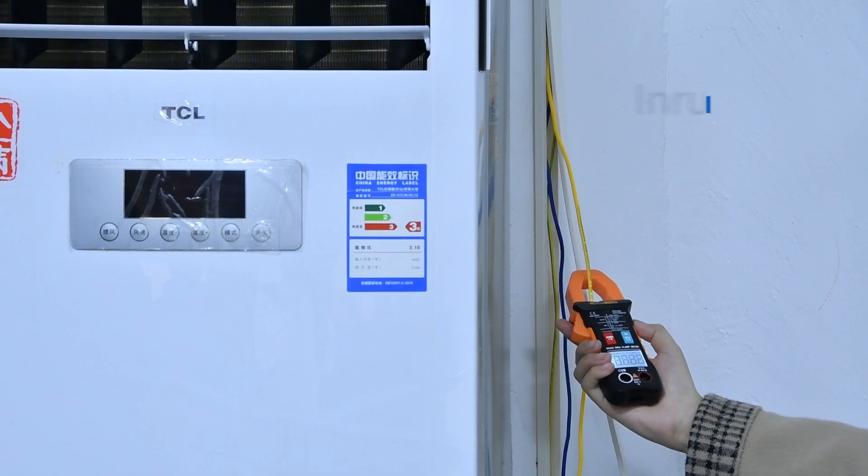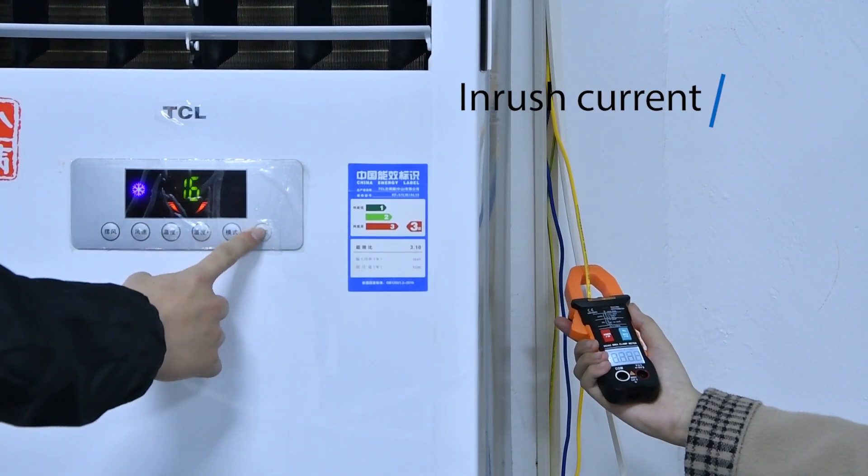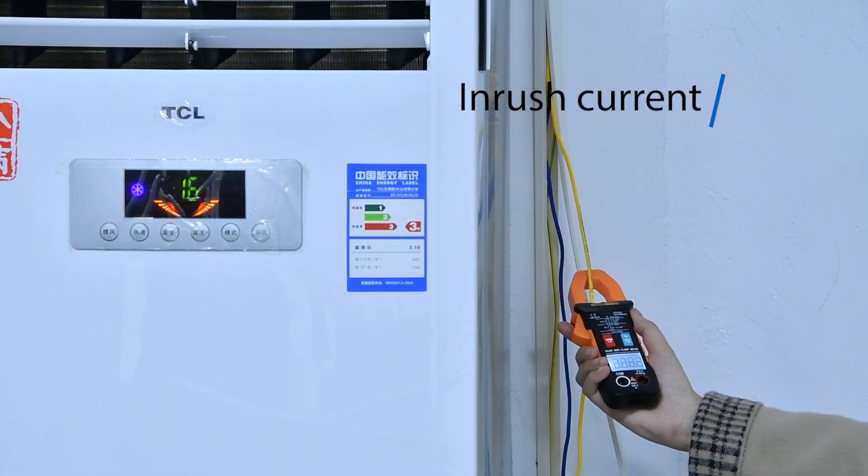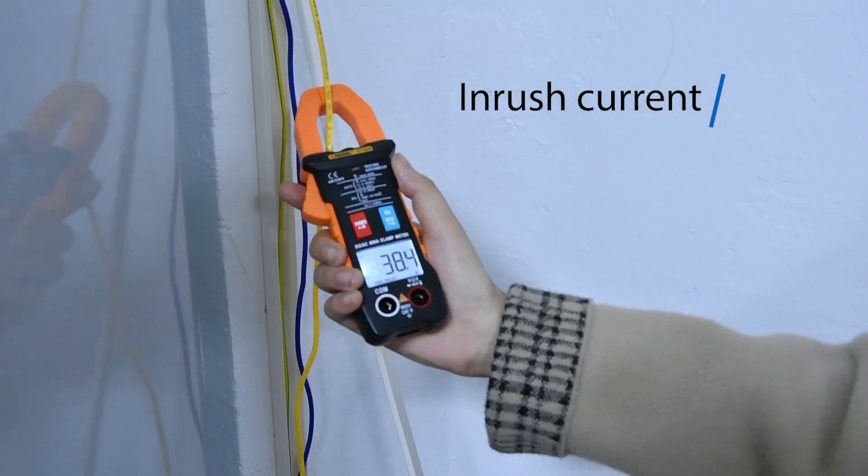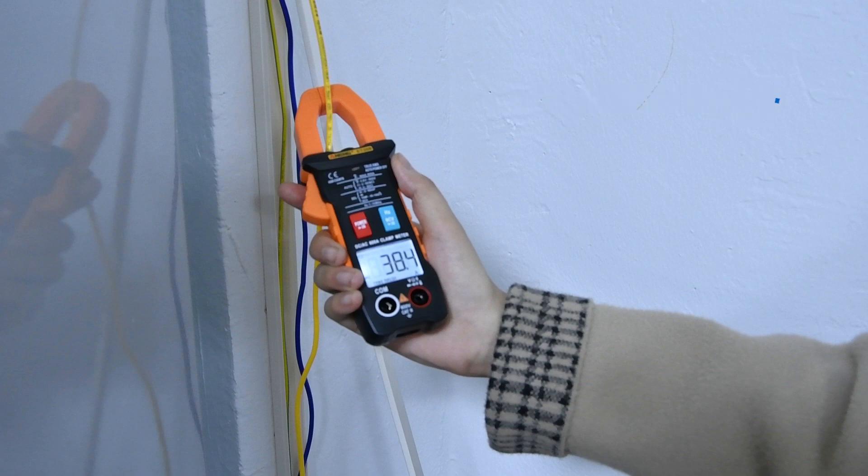The backlight key enters surge mode twice. The starting voltage exceeds the normal operating voltage, and the large current reaches for it.